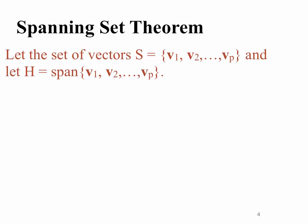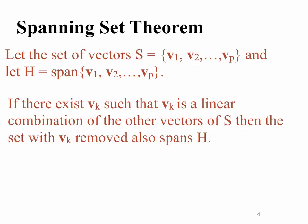So there's an important theorem called the spanning set theorem. And it says let the set of vectors S be equal to V1 to Vp. So you have P of these vectors and let H equal the span of V1 to Vp. And so if there exists some V sub K such that V sub K is a linear combination of the other vectors of S, then the set with V sub K removed also spans H. So what this means is that if you have those P vectors, if any one of those P vectors turns out to be a linear combination of the remaining vectors, then you could remove that K vector and the set S would still span the subspace H.